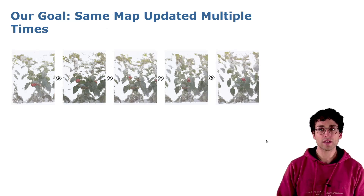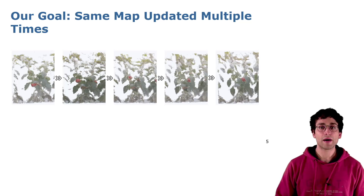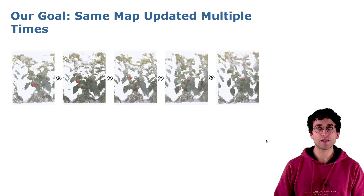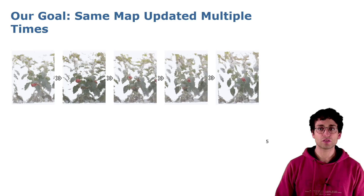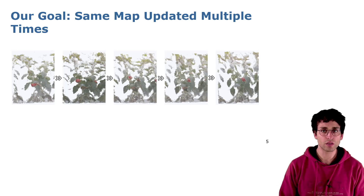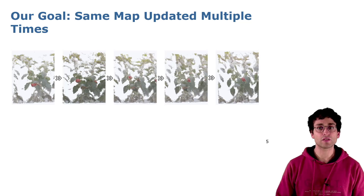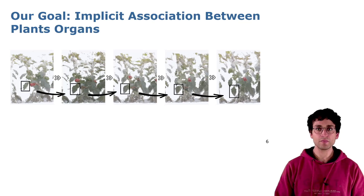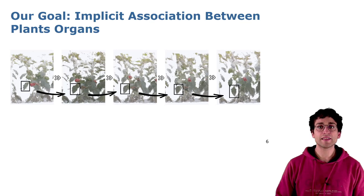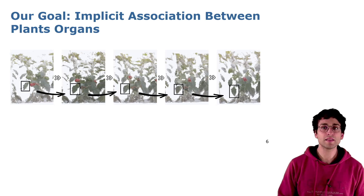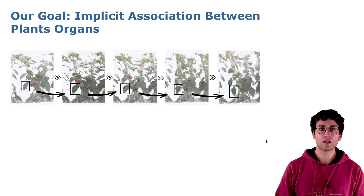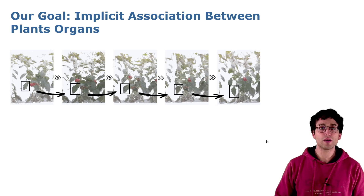Our goal in this work is to solve the main problem coming from static 3D models of plants by continuously updating a previously built model, matching new observations coming from new explorations. Instead of building a new representation at every exploration, we reuse the previous one by deforming it according to the organic growing of the plants. This will facilitate the tracking of individual organs' evolution over time because the association will be already implicit in the model itself.